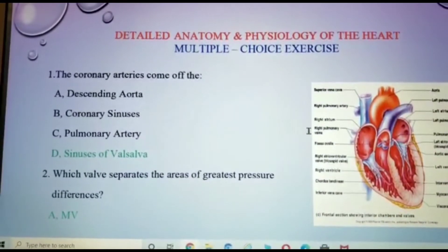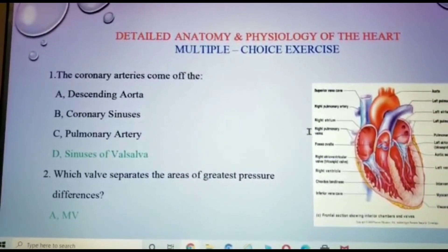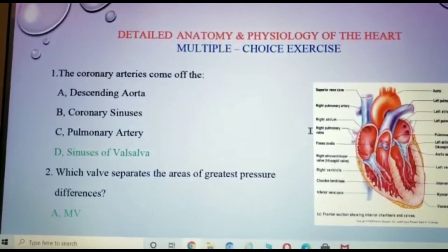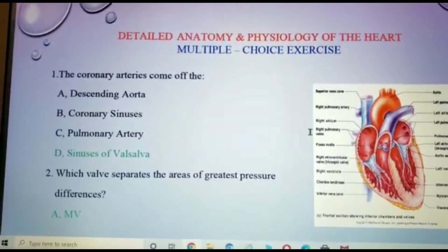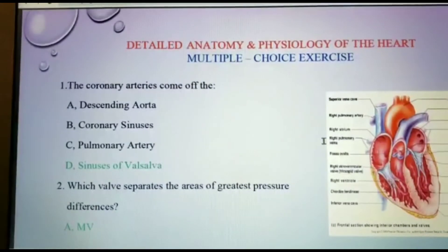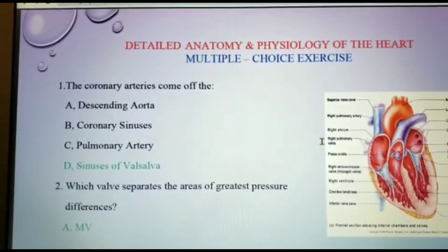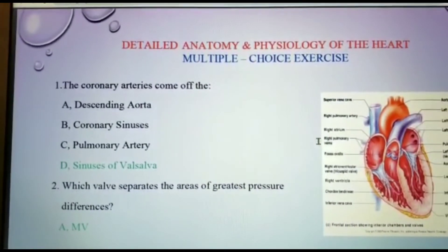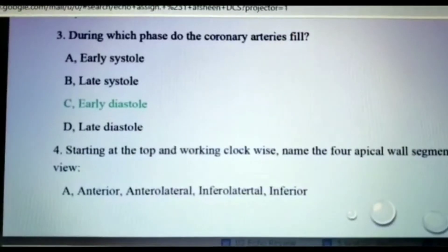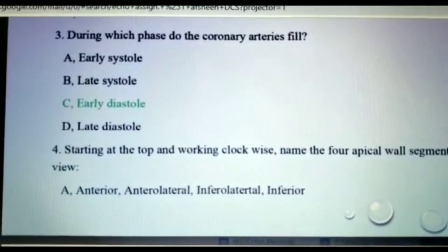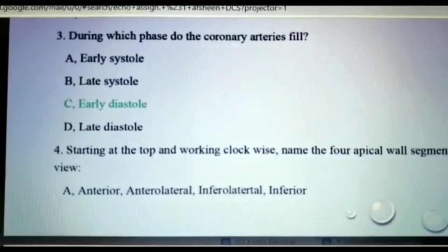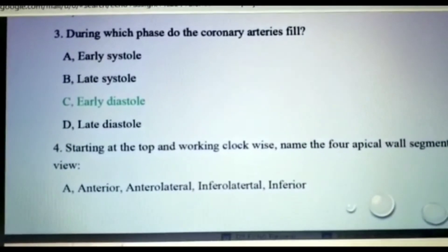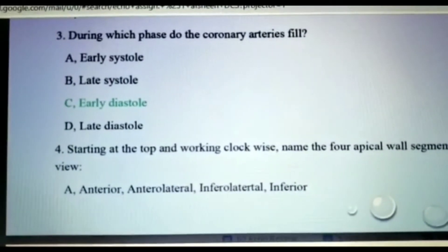The mitral valve is the valve which is present between the chambers with the highest pressure difference. The left atrium and left ventricle are the chambers of greatest pressure difference. During which phase do the coronary arteries fill? The coronary arteries fill during the early diastolic phase.